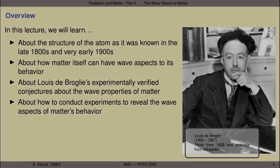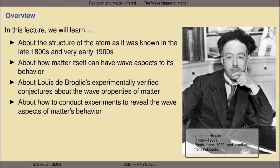In this lecture, we will learn the following things. We'll learn about the structure of the atom as it was known in the late 1800s and very early 1900s. We'll learn about how matter itself can have wave aspects to its behavior. We'll learn about Louis de Broglie's experimentally verified conjectures about the wave properties of matter, and how to conduct experiments that reveal those wave aspects.